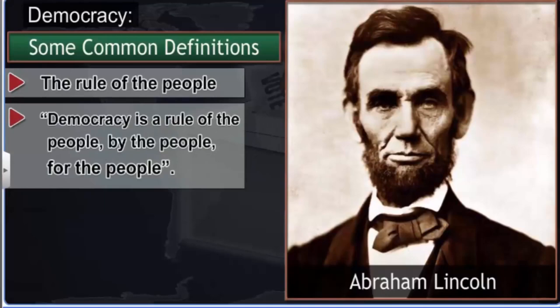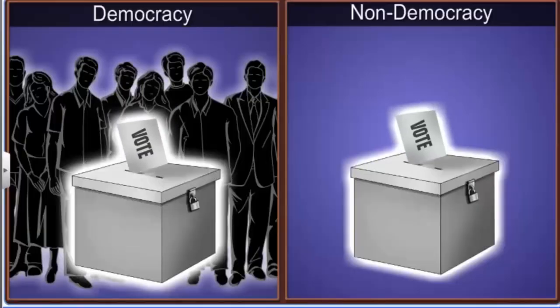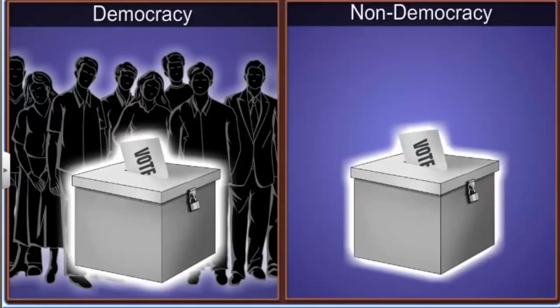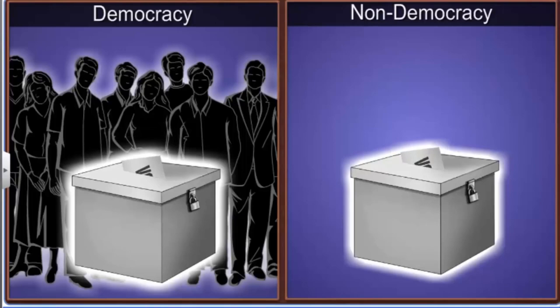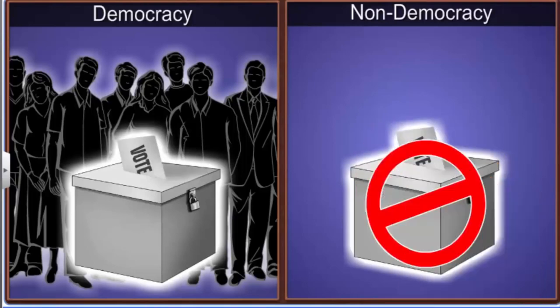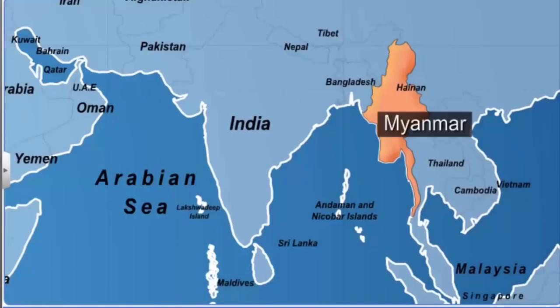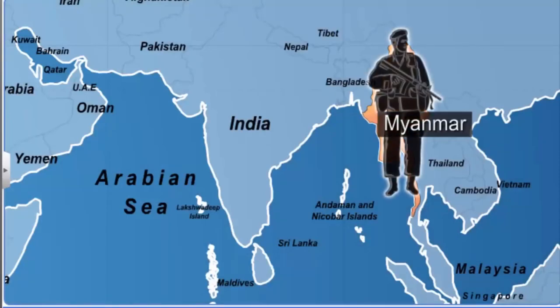This is in line with Abraham Lincoln's definition of democracy: democracy is a rule of the people, by the people, for the people. From this simple definition, you can clearly distinguish democracies from non-democracies. For example, we know that Myanmar is being ruled by the army.